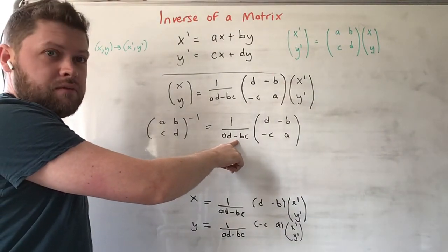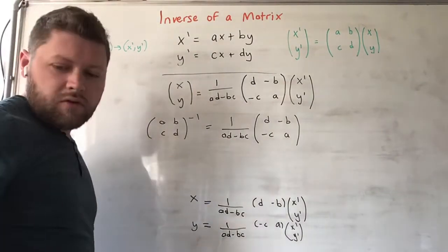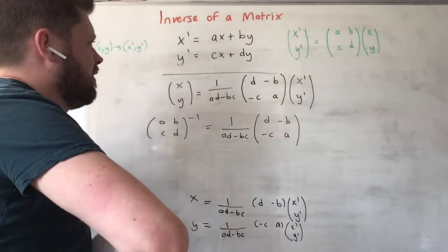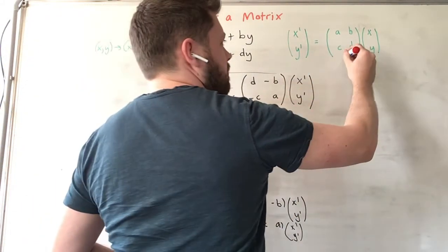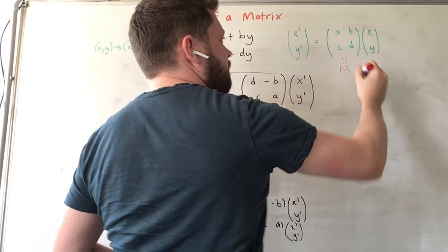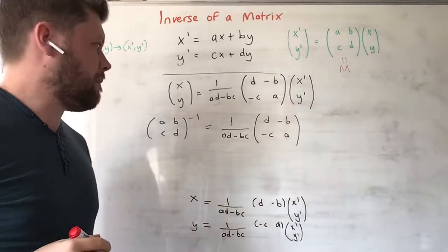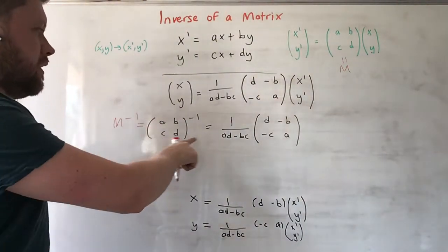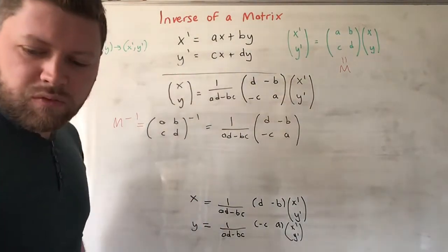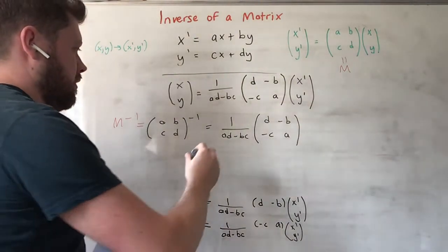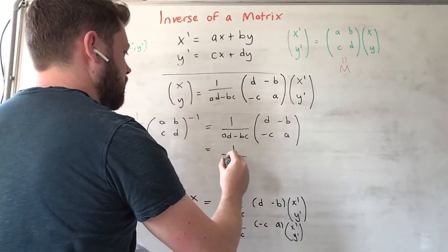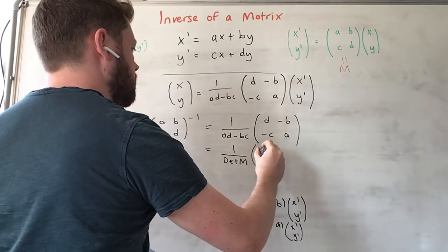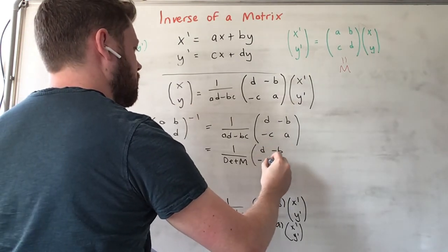You might recognize this as the expression for the determinant. So if we give this matrix a name, let's call it M, (a, b; c, d) is the matrix M, then M inverse is equal to this.